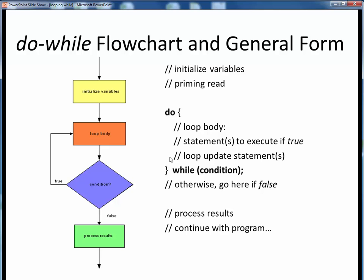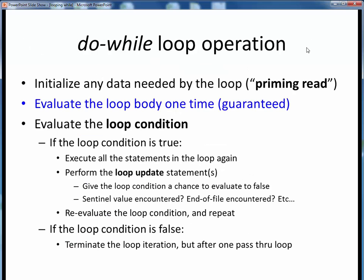That's how a do-while loop gets executed. To sum up: everything about it is identical to the while loop, except that we are guaranteed to evaluate the loop body at least one time, because we evaluate the loop condition after we evaluate the loop body.